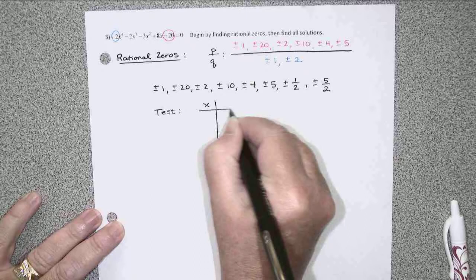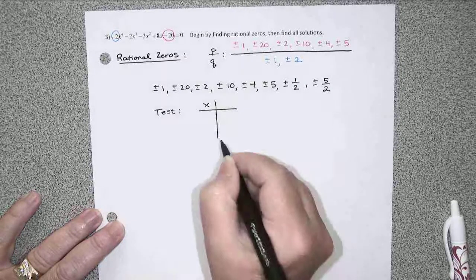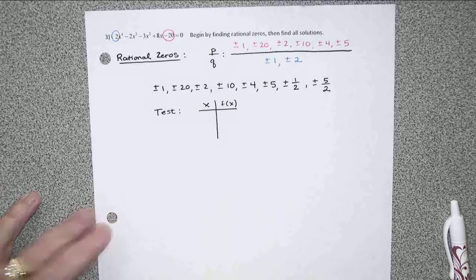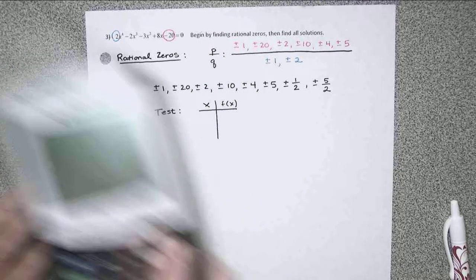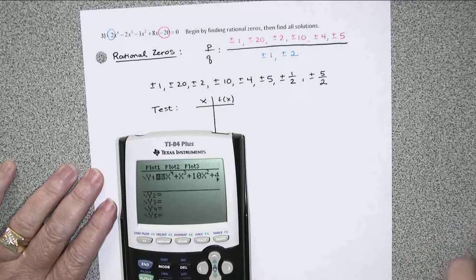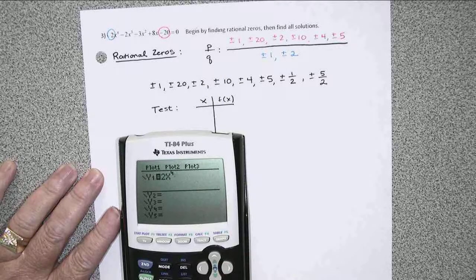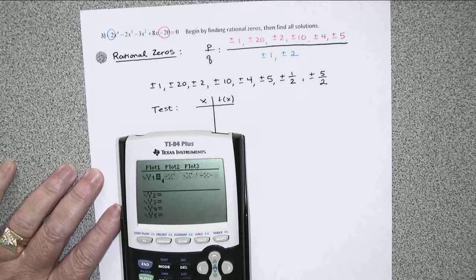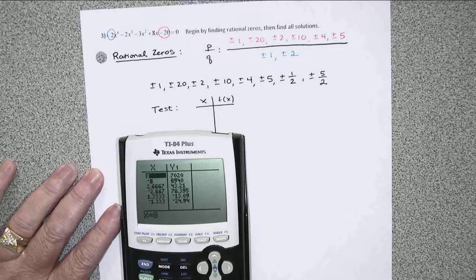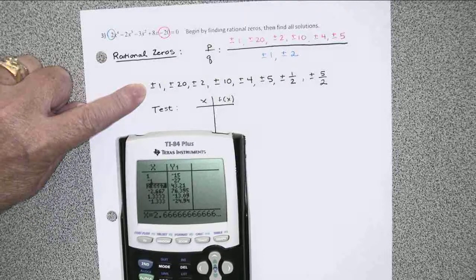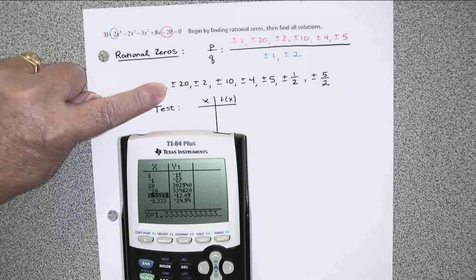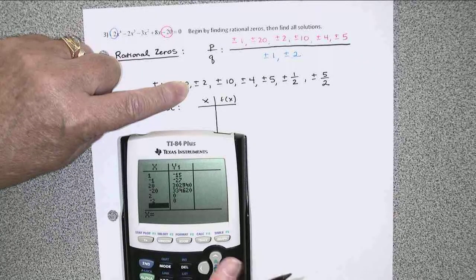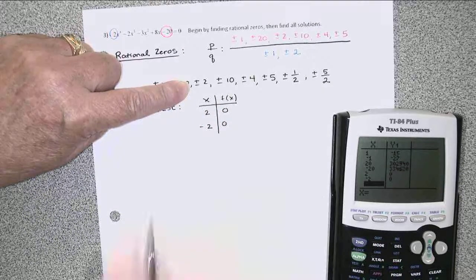We will test those. And I'm only going to write down the ones that actually work, but just a reminder, we take the x values, the possible rational zeros, and we plug them back into our original function, which I'll call f of x, and see which ones really do give us zero as an outcome. So we'll put a new y in. And in my table, I will start with plus and minus 1, no zeros. Plus and minus 20, no zeros. Plus and minus 2. Ah, both of those gave me zeros. So I'll jot those down. 2 gave zero. Negative 2 gave zero.